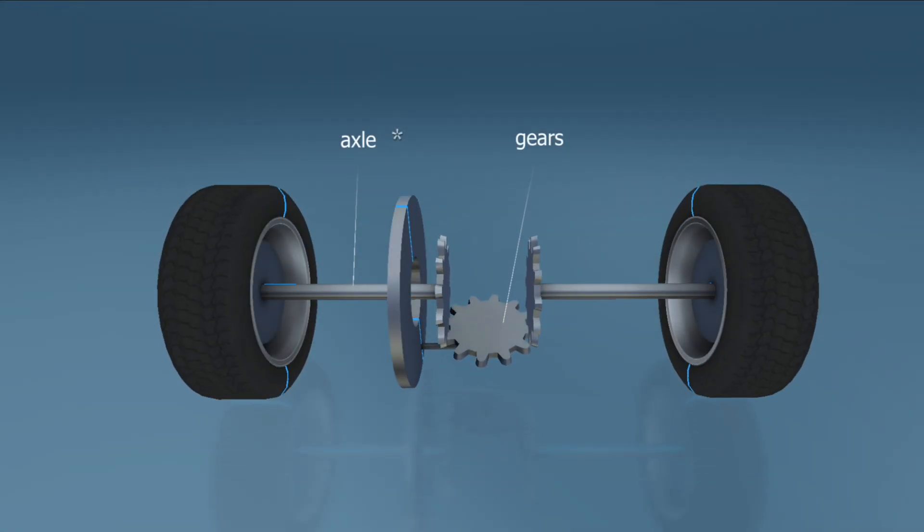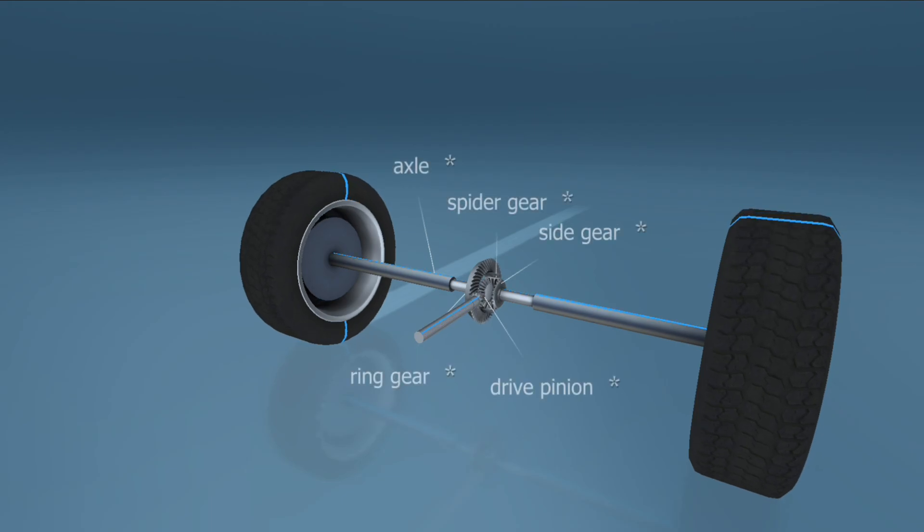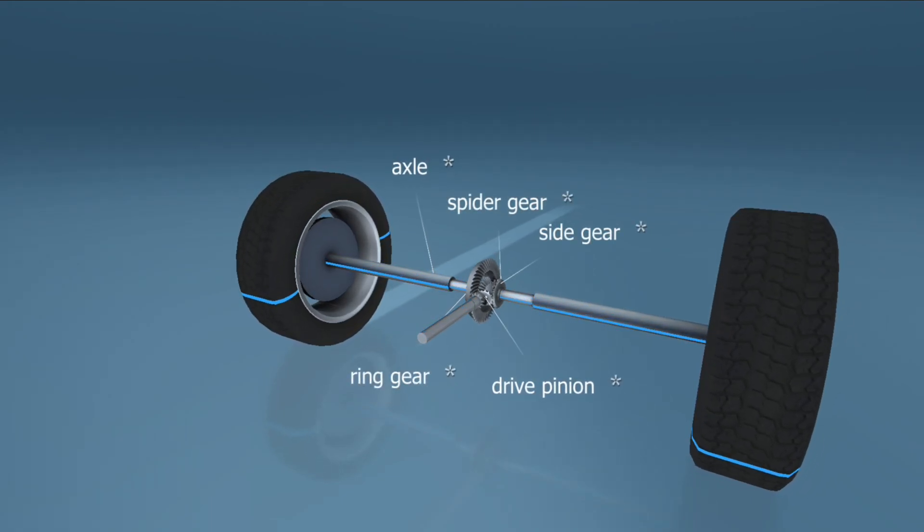If we replace the spokes and crossbars with gears, the contact will be firm and constant. If we make the gears thicker and stronger, we have a differential.